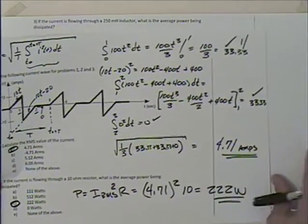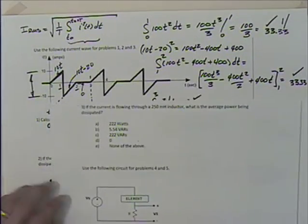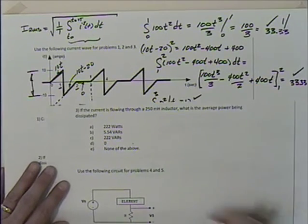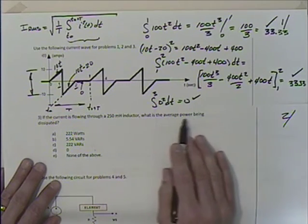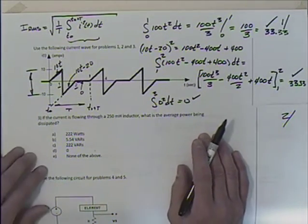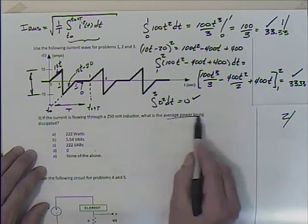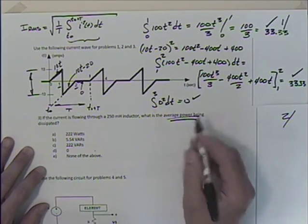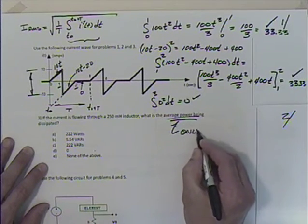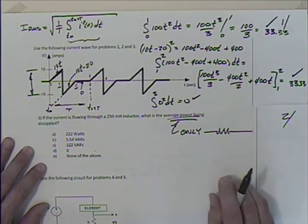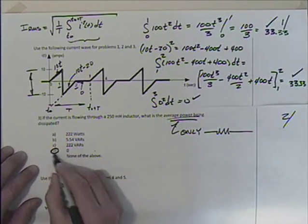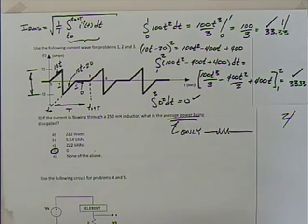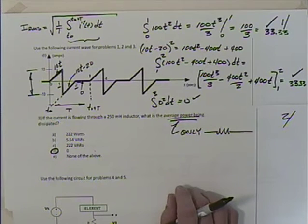Next: if the current flows through a 250 mH inductor, what's the average power dissipated? Key word — average power. Only resistors dissipate average power; inductors and capacitors do not. So the answer is D: 0 watts.